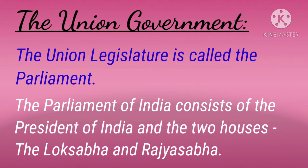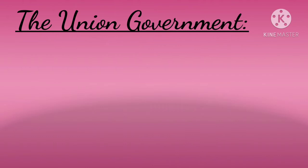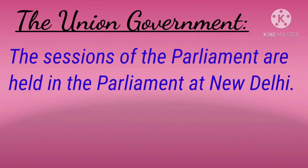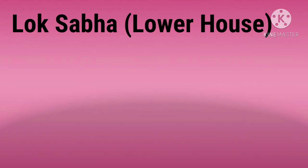The Union Legislature is called the Parliament. The Parliament of India consists of the President of India and the two houses — the Lok Sabha and the Rajya Sabha. The sessions of the Parliament are held in the Parliament at New Delhi. Let us know about the two houses of the Parliament. The first one is Lok Sabha, the lower house.